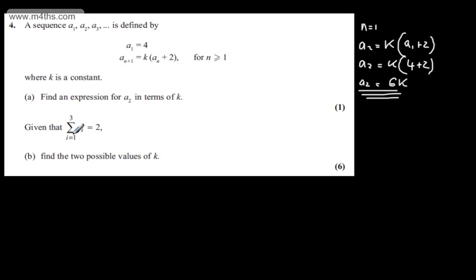Given the sum from i equals 1 to 3 of a sub i equals 2, in part b we need to find the two possible values of k. If we consider we're summing from 1 to 3, I already have a sub 1 and a sub 2, so we need to find a sub 3.